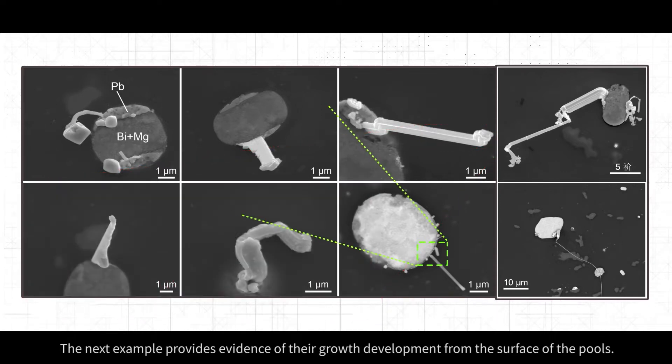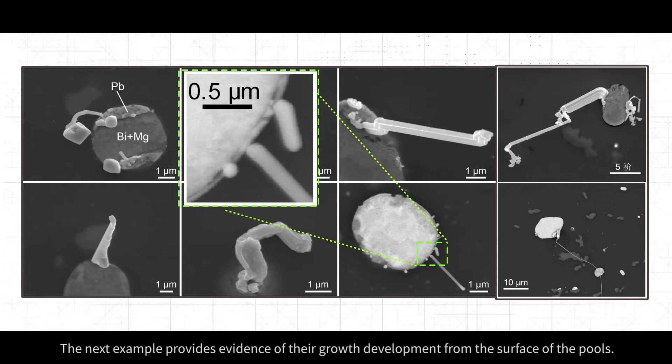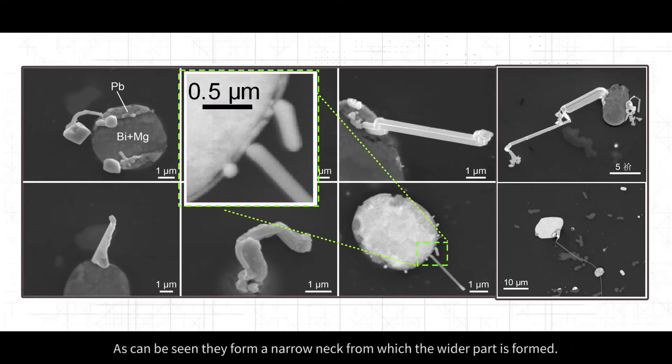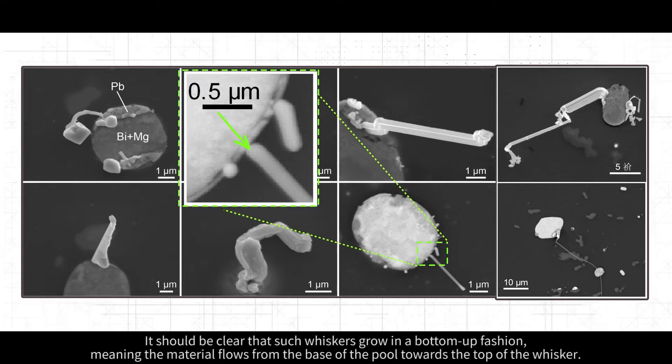The next example provides evidence of their growth development from the surface of the pools. As can be seen, they form a narrow neck from which the wider part is formed. It should be clear that such whiskers grow in a bottom-up fashion, meaning the material flows from the base of the pool towards the top of the whisker.